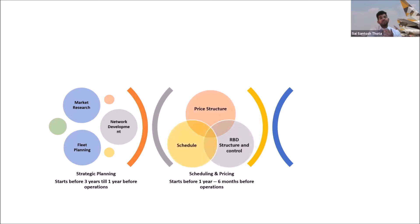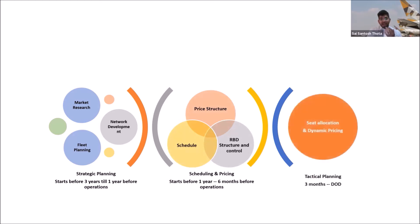Next, within one year, the schedule is supposed to be filed, and the RPD structure and the control of the inventory are supposed to be decided, along with the pricing structure. And tactical planning comes when it is just 90 days before the day of departure.